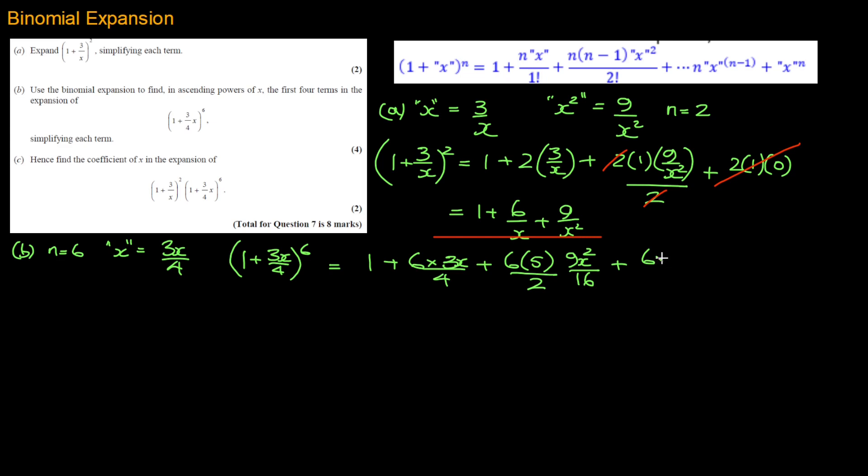Okay, 6 times 5 times 4. That's your n, n minus 1, n minus 2. And now this term cubed, which is 27x cubed over 4 times 4 times 4. And this divided also by 3 factorial, which is 3 times 2.